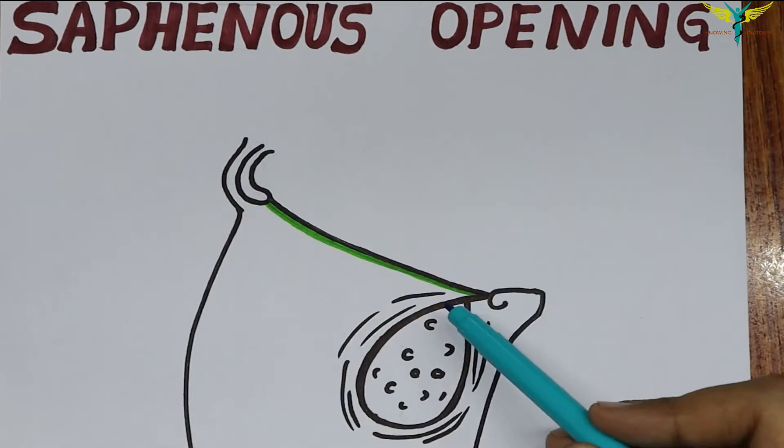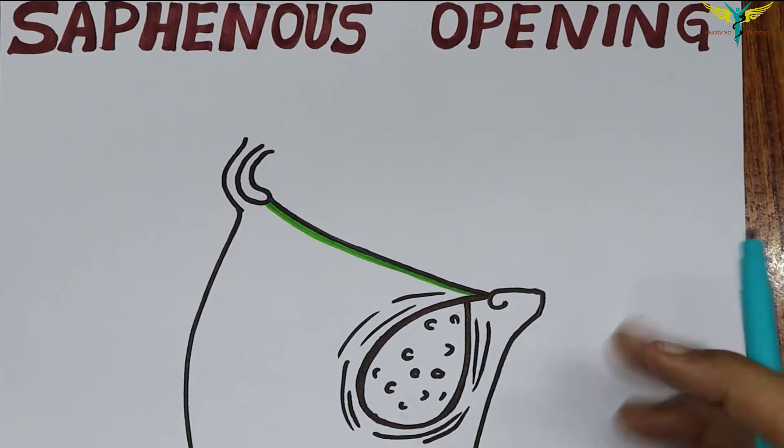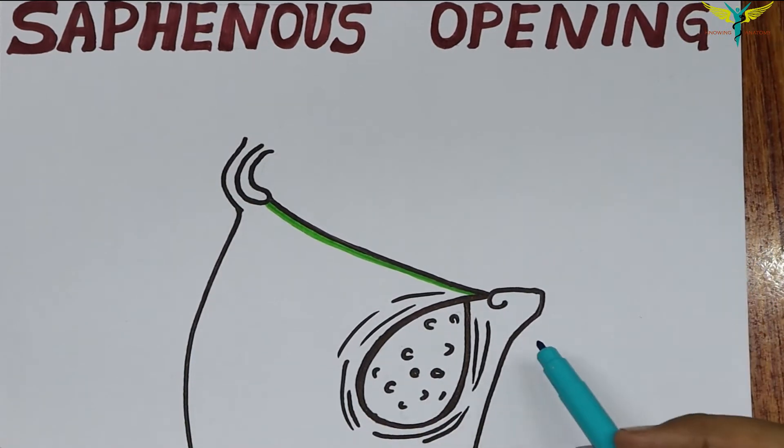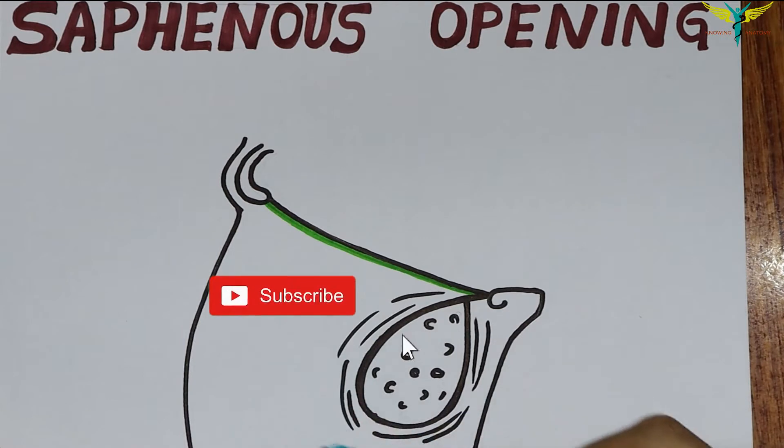The saphenous opening is an oval-shaped opening in the fascia lata that is present in the upper medial part of the front of the thigh.